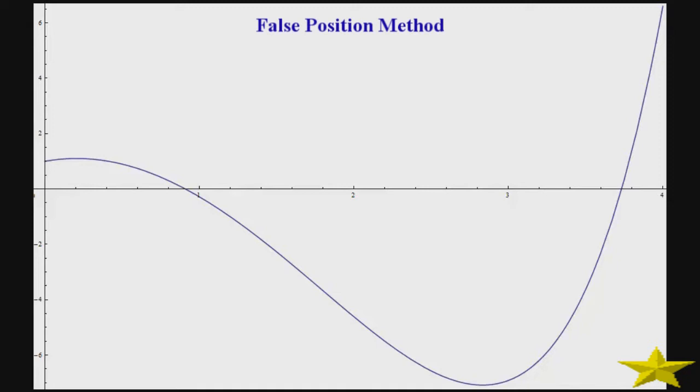In this method, we have initially a range just like we had for bisection method. However, the difference is that it does not necessarily divide the range into two equal parts, but rather randomly. For instance, we have initial range from x0 to x1. So the next point will be x2. We find x2 by putting x0 and x1 into the formula from secant method.